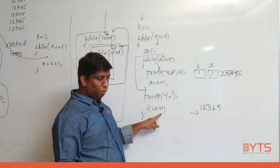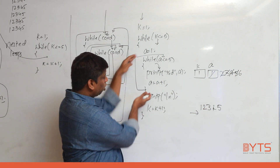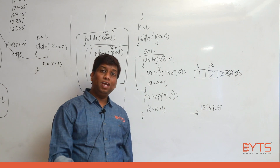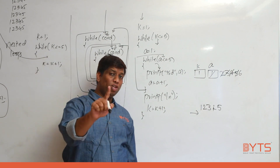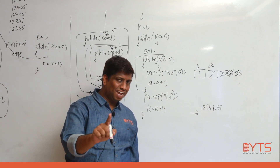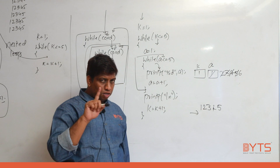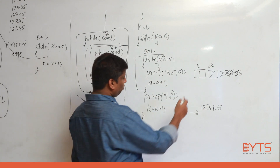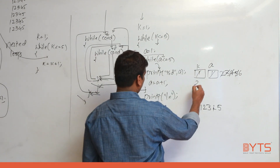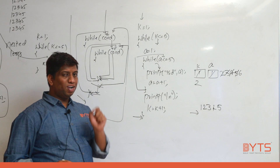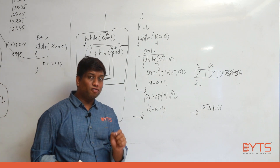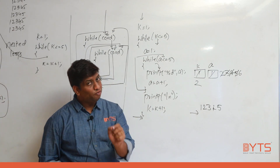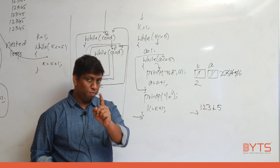Now k = k + 1, so k = 2. Very important: within the inner loop, we forcibly kept the outer loop variable as a constant. Only now is k updated to 2. When we reach the outer loop condition again, k = 2, a = 6. Remember that.